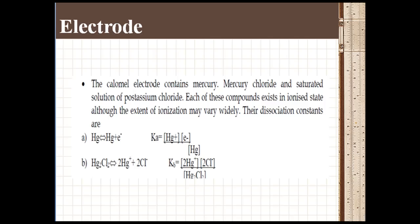The calomel electrode contains mercury, mercuric chloride, and saturated solution of potassium chloride. Each of these compounds exist in ionized state, although the extent of ionization may vary widely. The dissociation constants are as given in the diagram.